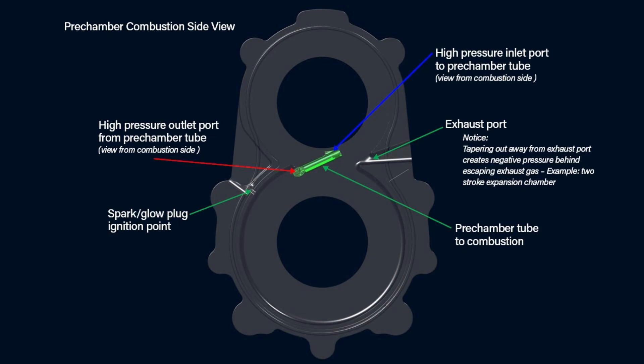Connecting to the pre-chamber tube to combustion, and then to the high-pressure inlet port to pre-chamber tube with view from combustion side. Lastly, on the other side, we have the exhaust port. Notice, tapering out away from exhaust port creates negative pressure behind escaping exhaust gas.